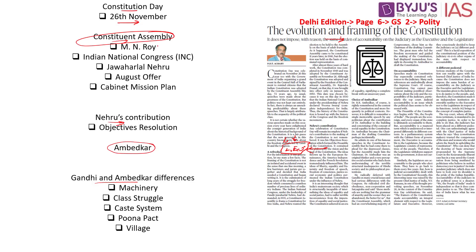The Constituent Assembly's proposal did not come immediately in 1946. The proposal was initially made by M.N. Roy, a communist leader who pushed the communist movement in India, back in the year 1934. He was the first to decide that India required a Constituent Assembly so that the people of India could make the constitution on their own.